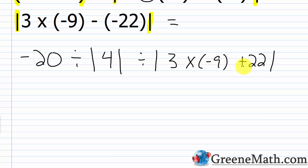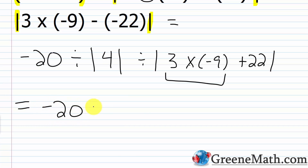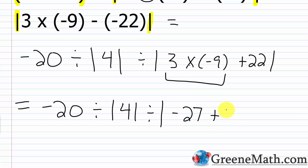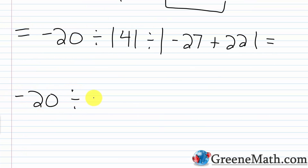Inside these absolute value bars, I have multiplication and addition, so I would multiply first. What is 3 times negative 9? Positive times negative is negative, and 3 times 9 is 27, so this gives me negative 27. So I'd have negative 20 divided by the absolute value of 4, divided by the absolute value of negative 27 plus 22. Performing that operation, negative 27 plus 22 is negative 5. So we'll rewrite this as negative 20 divided by the absolute value of 4, divided by the absolute value of negative 5.